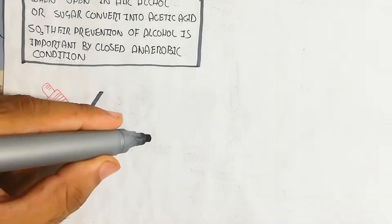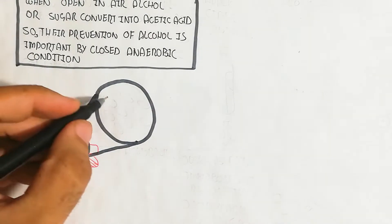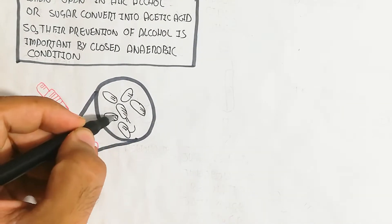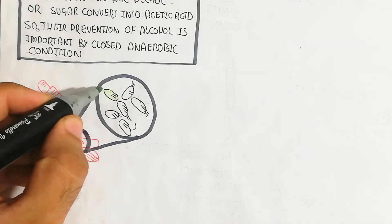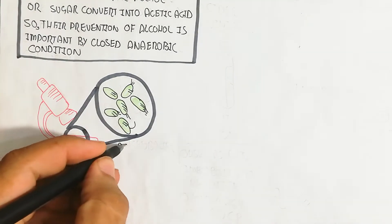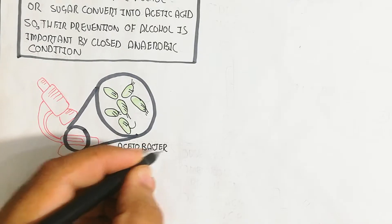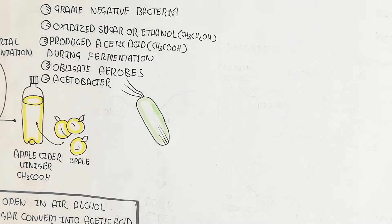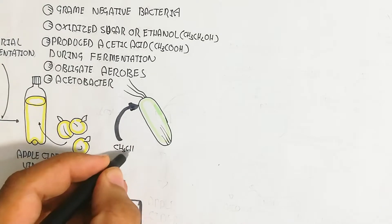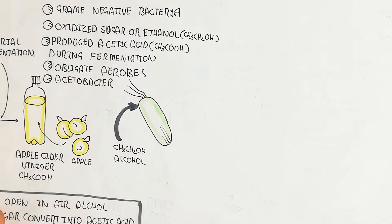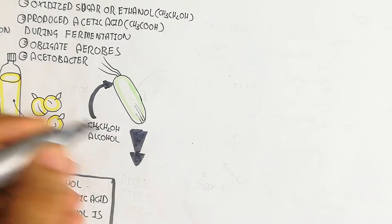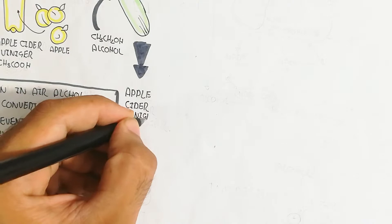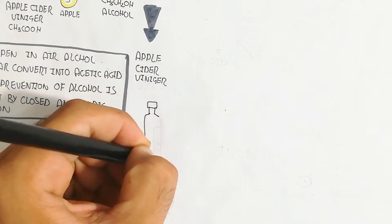This electron microscope image shows acetobacter — a microorganism that appears as a rod-shaped bacterium. Here in this diagram I am drawing the acetobacter, which belongs to the acetobacter family.